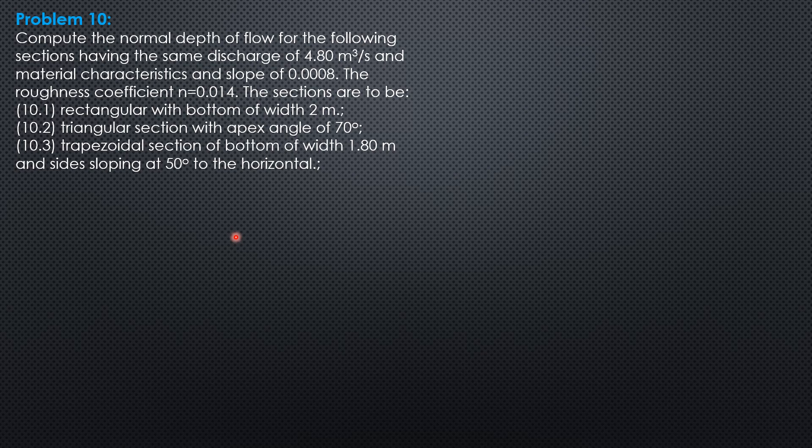We'll use the formula Q equals area to the 5 thirds S to the 1 half over n perimeter to the 2 thirds. That will only compute for area and perimeter. The area rectangular is 2 times depth. The perimeter is width 2 plus 2D.